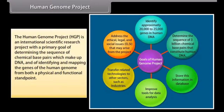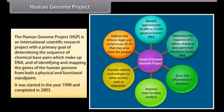The Human Genome Project (HGP) is an international scientific research project with the primary goal of determining the sequence of chemical base pairs which make up DNA and of identifying and mapping the genes of the human genome from both a physical and functional standpoint. It was started in the year 1990 and completed in 2003.